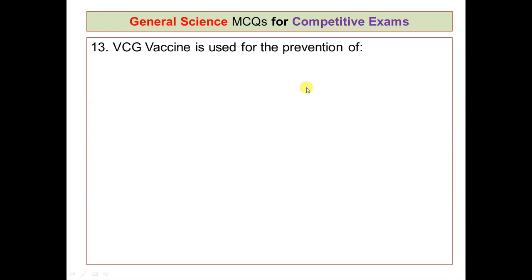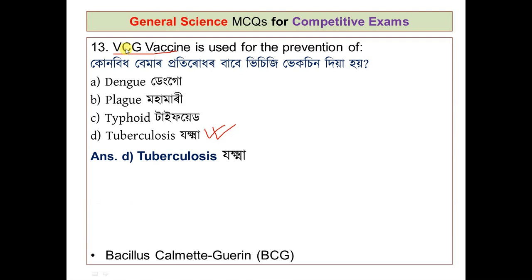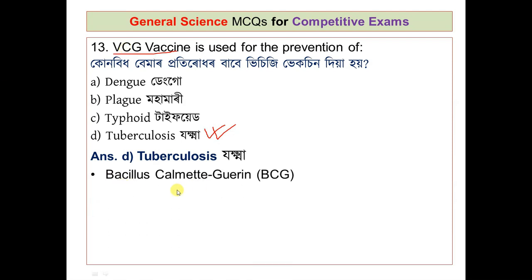Question number 13: the BCG vaccine is used for the prevention of which disease? The options are dengue, cholera, typhoid, and tuberculosis. The correct answer is tuberculosis (TB). BCG stands for Bacillus Calmette-Guérin and it is used to prevent tuberculosis.